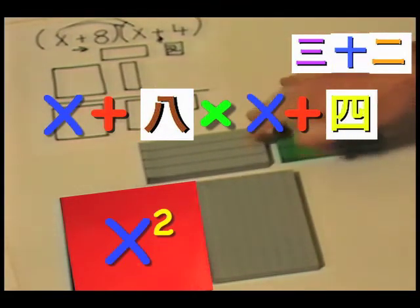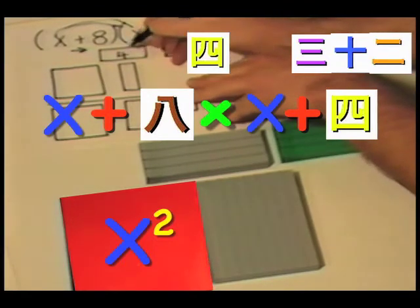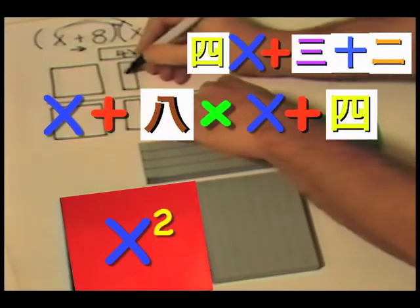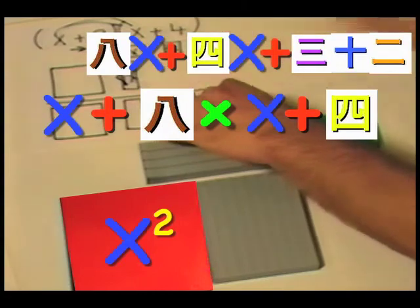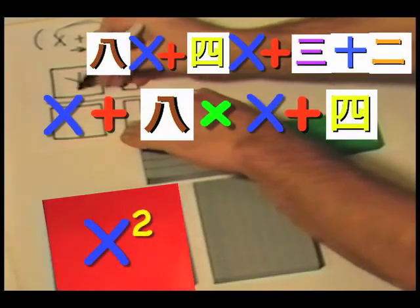We will record the number of x's we have. We have 4x's. In this rectangle, we have 8x's. And this rectangle is x squared.